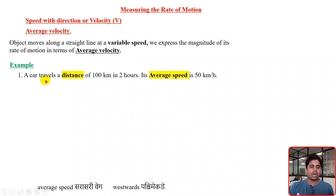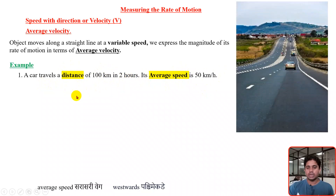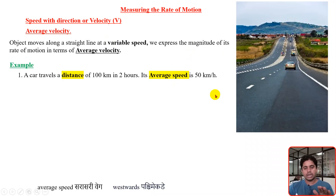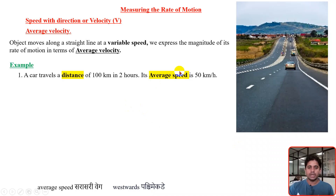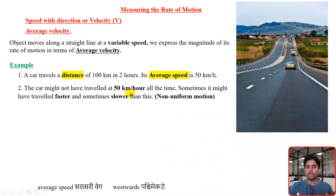Let us go in detail. Let us take one example: a car travels a distance of 100 kilometers in two hours. Its average speed we will consider as 50 kilometers per hour. Here we have mentioned a distance and here we have mentioned the speed. Whenever the car is traveling, as we know it will vary its speed. When this car travels on the highway, wherever there is an increased slope or decreased slope — the road is inclined upward or inclined downward, or sometimes the road will be flat — accordingly we will do variation in the speed. So this 50 kilometers per hour is not all the time; the car might have traveled faster and sometimes slower than 50 kilometers per hour.